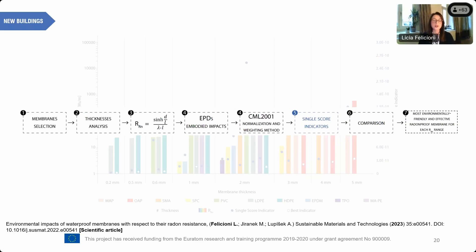The steps followed for the membrane assessment were: first, membrane selection; second, analysis of thicknesses effective for radon protection; third, calculation of radon resistance; fourth, collection of EPDs to obtain embodied impacts from A1 to A3 (the production stage); fifth, application of the single score indicator methodology; and finally, comparison of membranes to identify the most environmentally friendly and radon-effective option for each resistance range or membrane thickness.